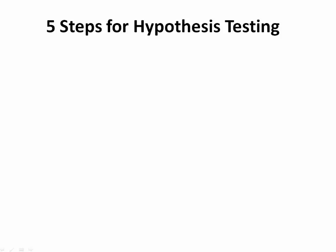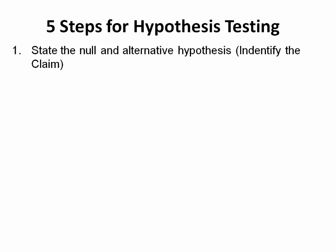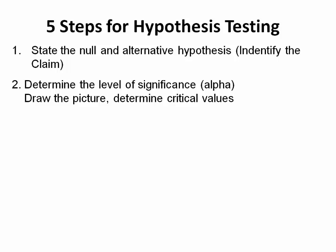We're reminded again of the five steps for hypothesis testing. In step one, we're going to state the null and alternative hypothesis and also identify the claim. In step two, we're going to determine the level of significance, which is known as alpha.